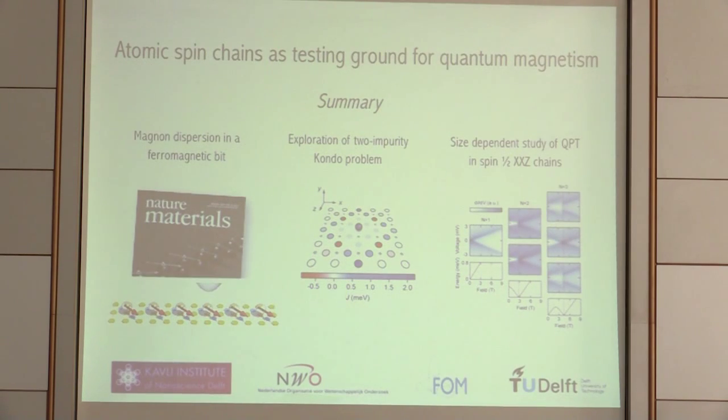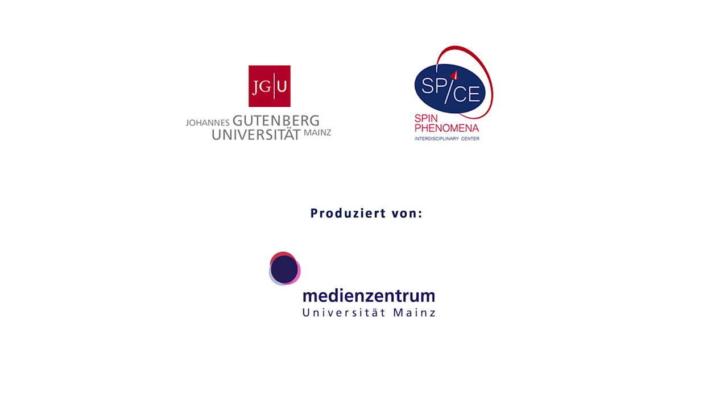With that I come to the end of my talk. I would like to quickly summarize. I've shown you that we can see the magnon dispersion in a ferromagnetic bit, and we can see the role of these magnons in the flipping process. We can explore the two impurity Kondo problem by applying magnetic fields, and really go through the two impurity Kondo screening phase. And finally recently we have seen the beginnings of a quantum phase transition in these spin one-half XXZ models in transverse fields. And with that I thank you for your attention.